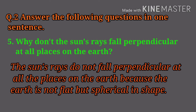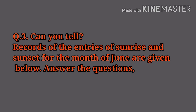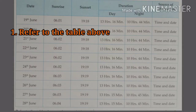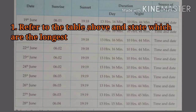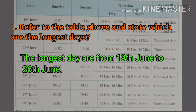The sun's rays do not fall perpendicular at all places on the earth because the earth is not flat but spherical in shape. Question number three: Records of the entries of sunrise and sunset for the month of June are given below. Refer to the table above and state which are the longest days — the longest days are from 19th June to 26th June.